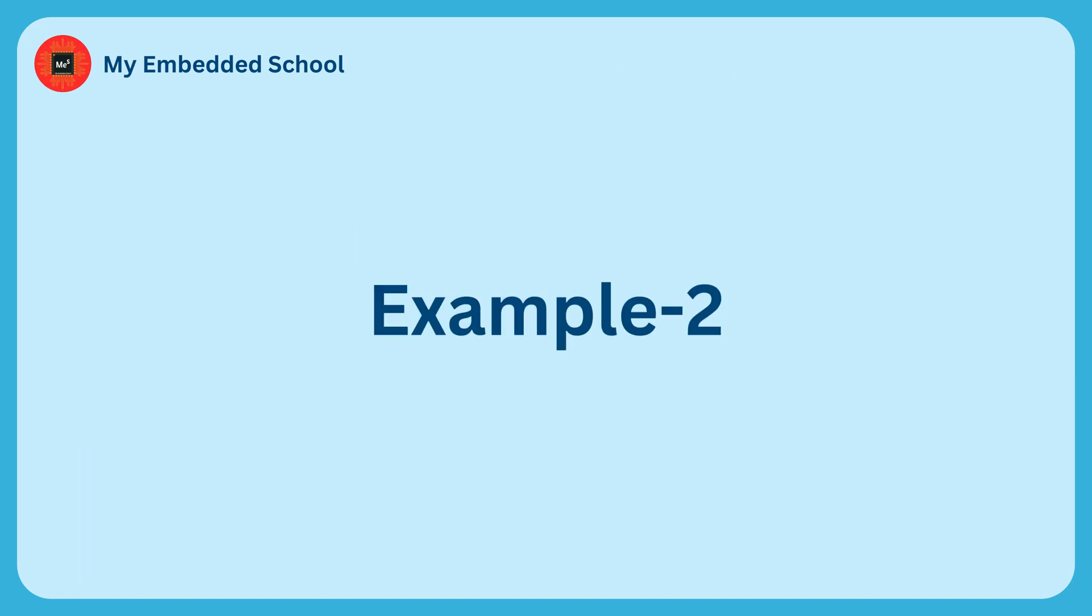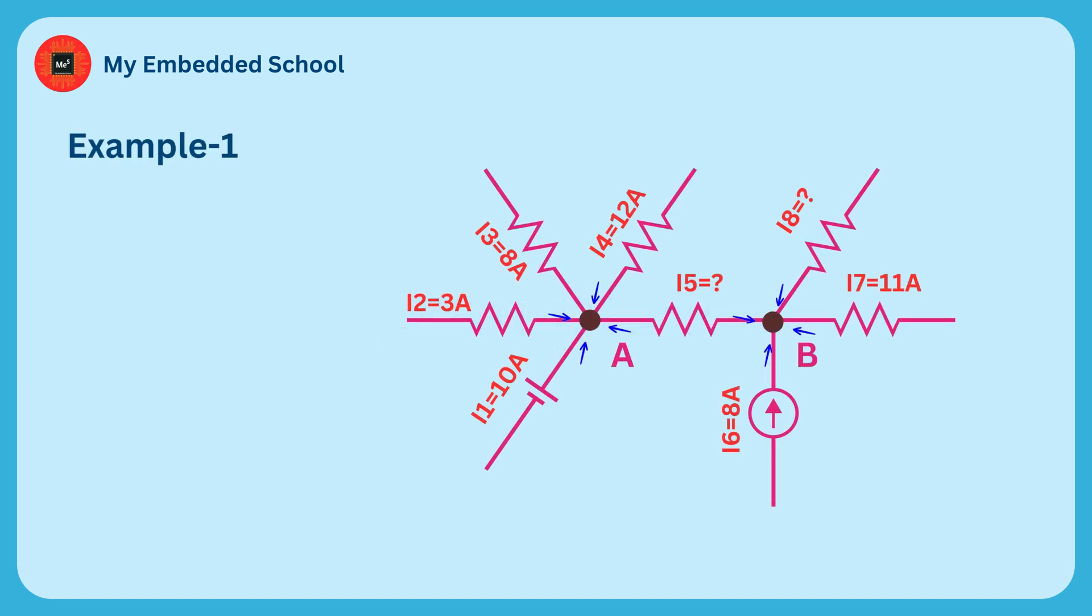We will take one more example to better understand this law. In this circuit, we have two nodes: Node A and Node B. First, we apply KCL at Node A.